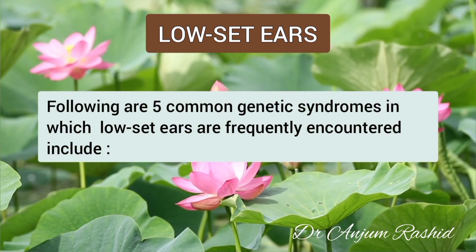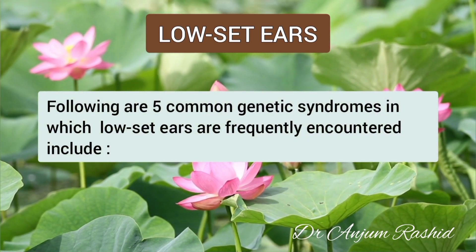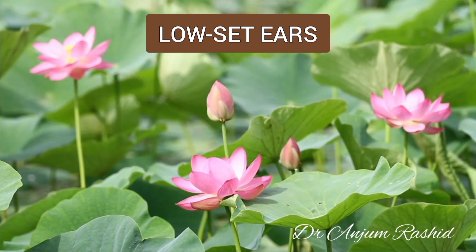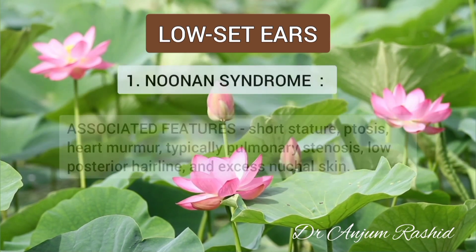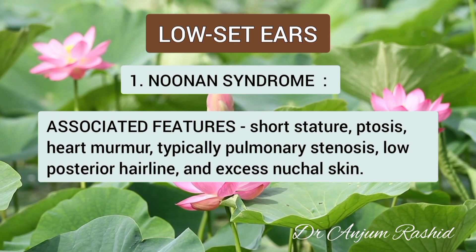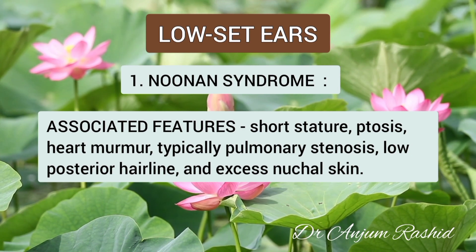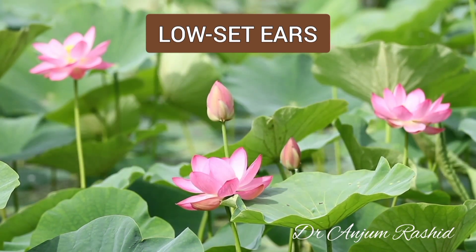Following are five common genetic syndromes in which low-set ears are frequently encountered. Number one: Noonan syndrome. Associated features include short stature, ptosis, heart murmur — typically pulmonary stenosis — low posterior hairline, and excess nuchal skin.